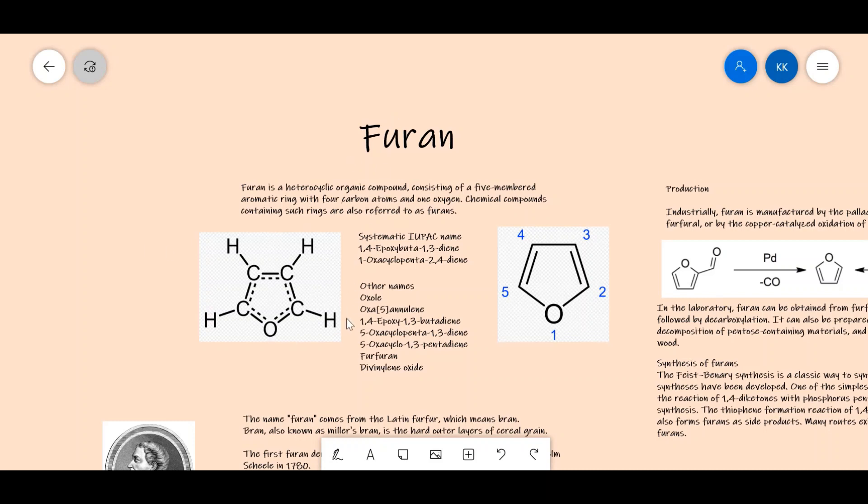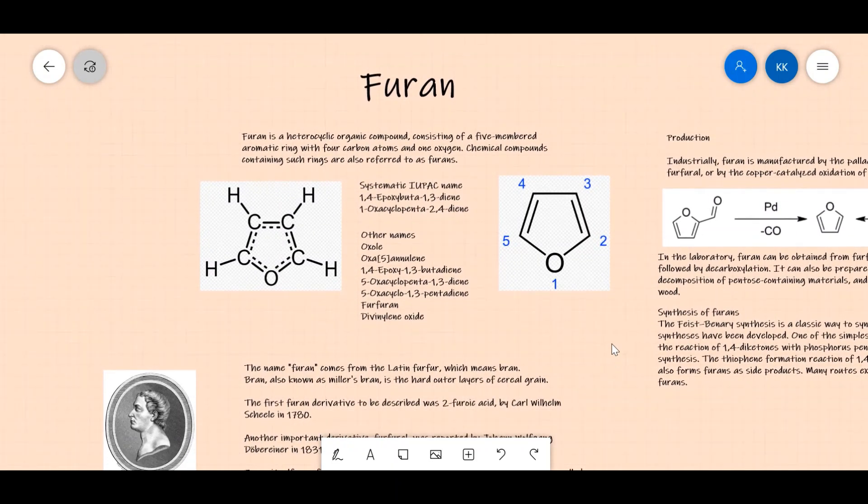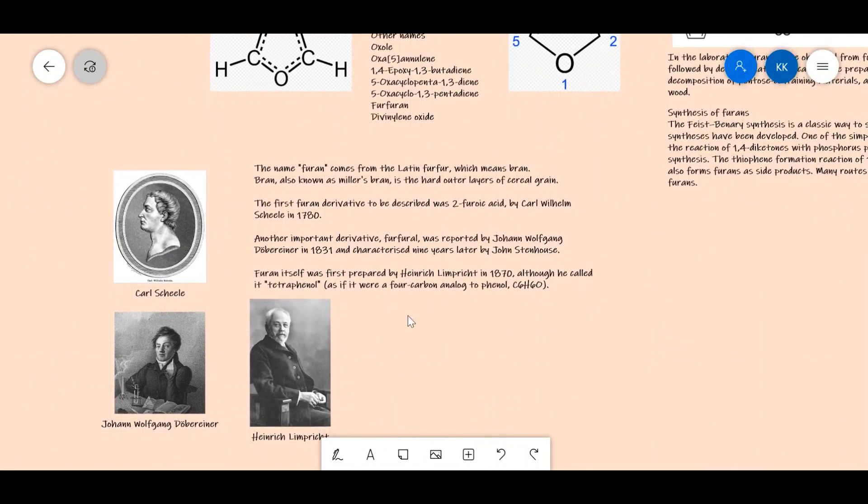But the preferred IUPAC name remains Furan. It's also known by other names such as furfuran, auxole, oxafole, and 1,4-epoxy-1,3-butadiene. Now let's look at how it got the name.